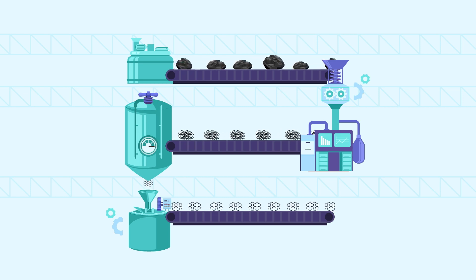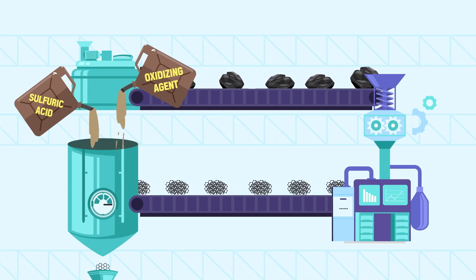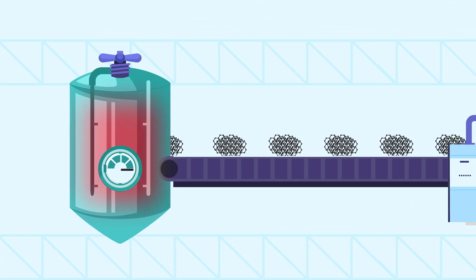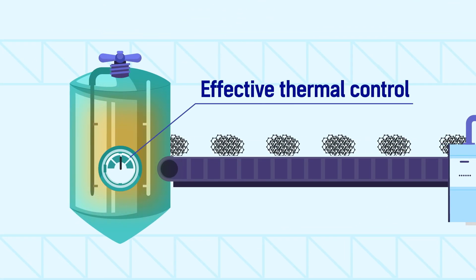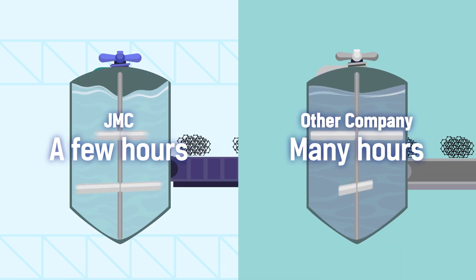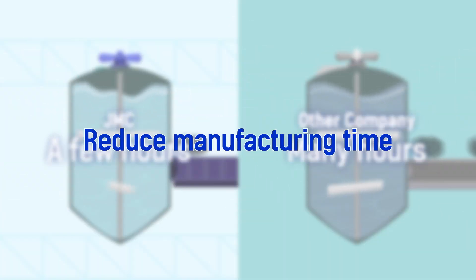In the oxidation process, sulfuric acid is used as a solvent and a strong oxidizing agent. At this time, a technique to effectively control a large amount of heat is very important. Closely controlling the reaction can reduce the manufacturing time.